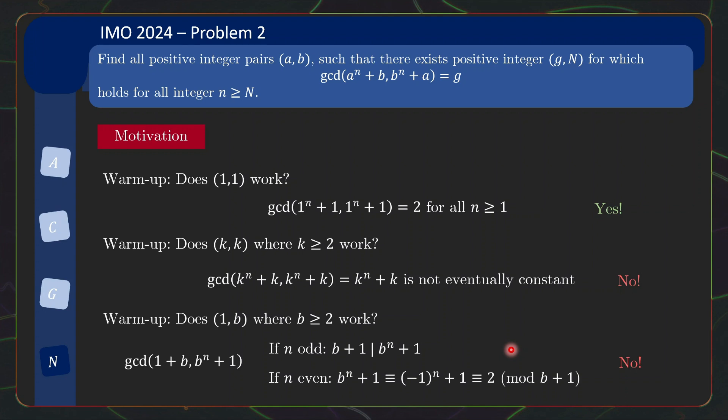This turns out to be quite an important example to consider because you realize that what has obstructed the eventual constant behavior is there's some pattern where quite regularly b + 1 is the gcd but outside of the regular pattern, there's also instances where b + 1 is not the gcd. So maybe you can find some behavior where there's some pattern where something appears in the gcd regularly but it doesn't appear in the other gcd values which means the gcd will not be eventually constant.